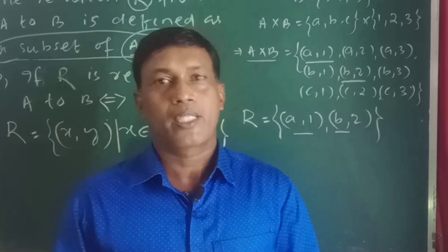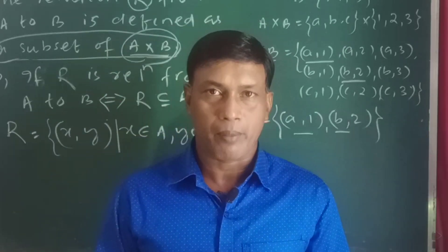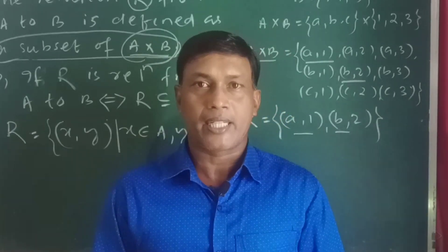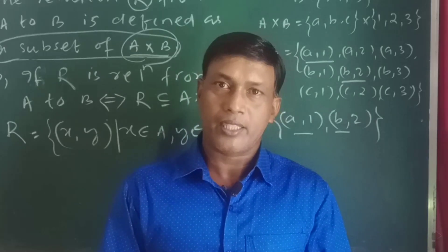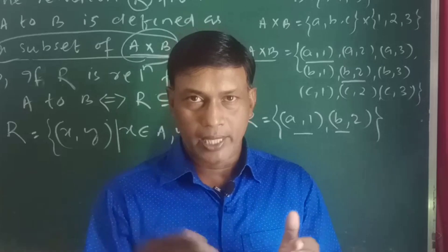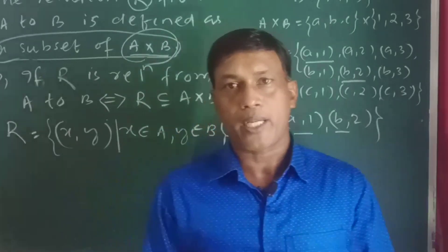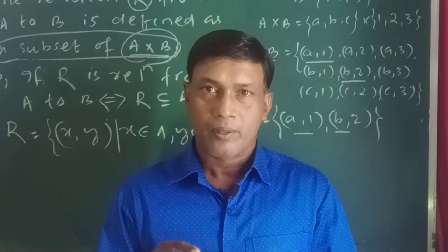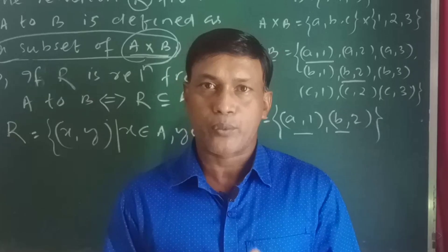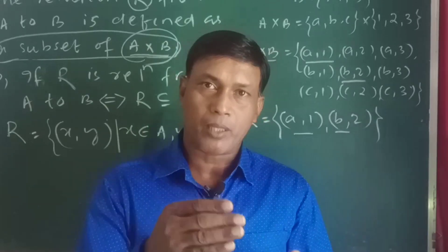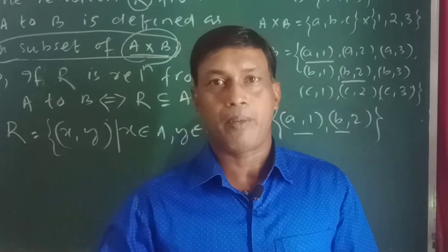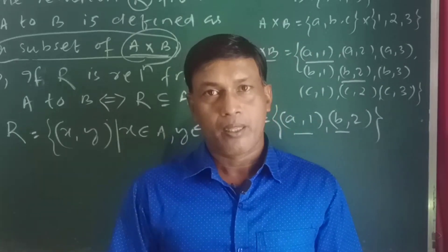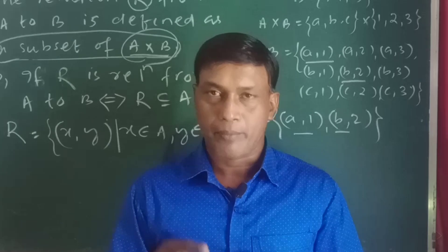Relation is always from one set to another set. For example, suppose a girl of one family marries a boy of another family — then a relation is created between two families. The relation moves from one family to another family. But practically, what happens? The members of the two families are related. Practically the members are related.